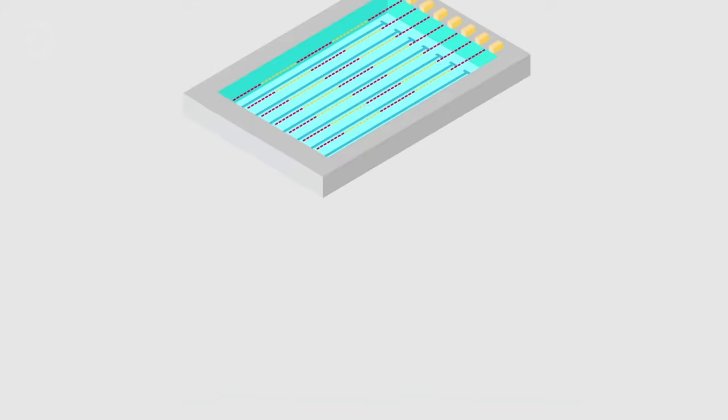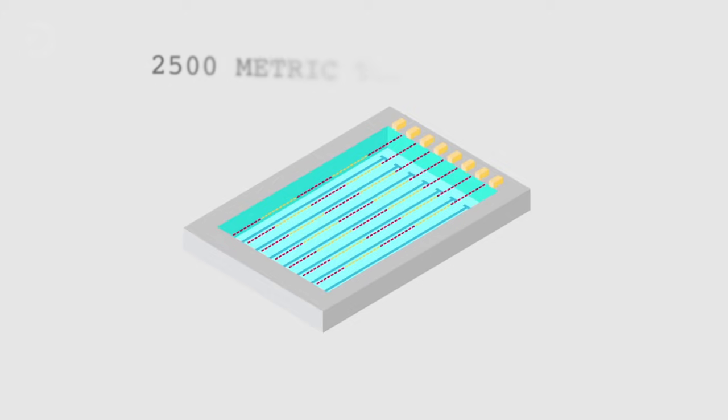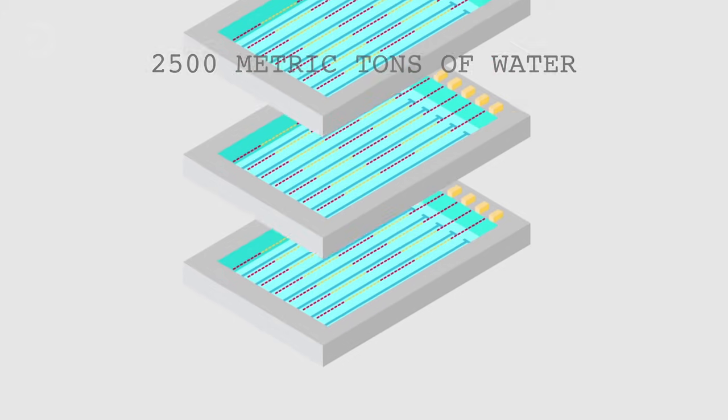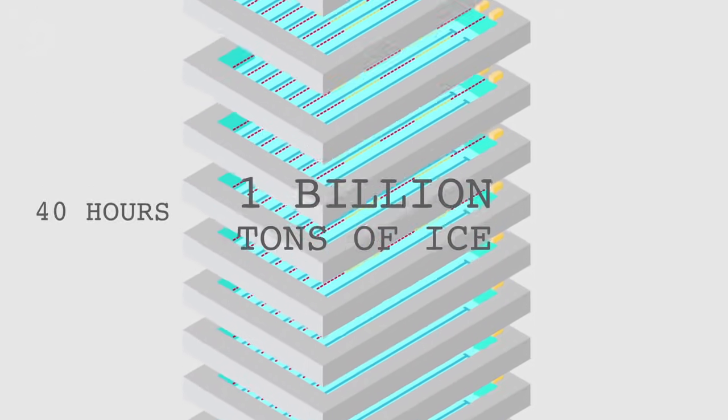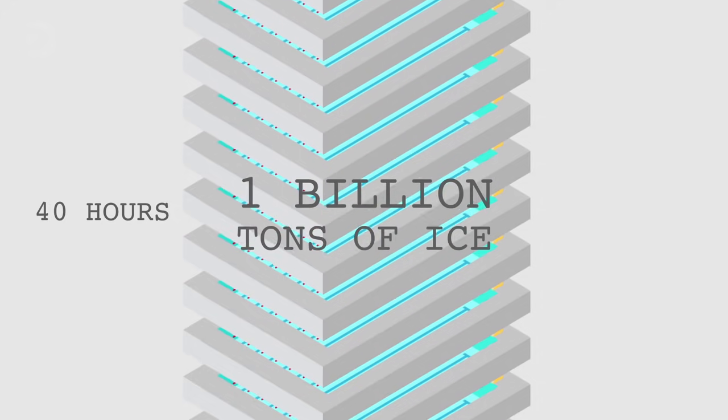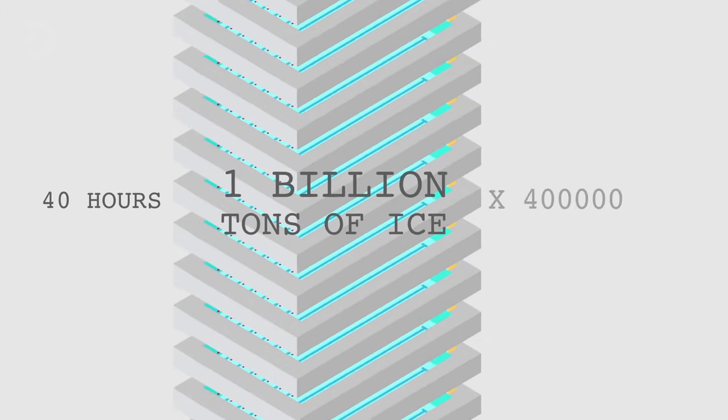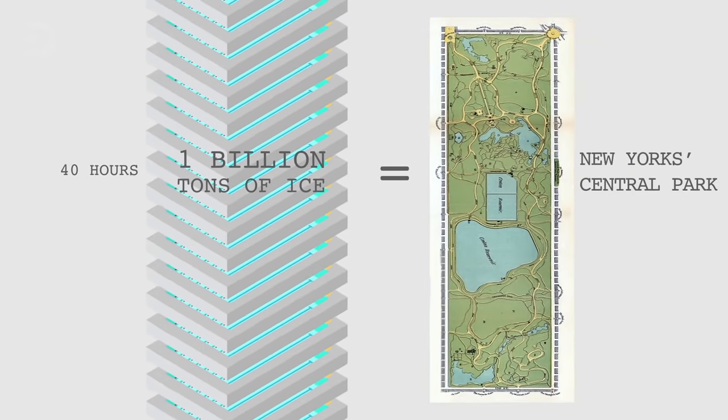But we can use Olympic-sized swimming pools which require 2,500 metric tons of water to fill. Every second, Antarctica loses roughly triple this mass. This means that every 40 hours, Antarctica loses one gigaton or one billion tons of ice. That's enough to fill 400,000 Olympic-sized swimming pools, which, if you put to scale, would equal New York's Central Park.